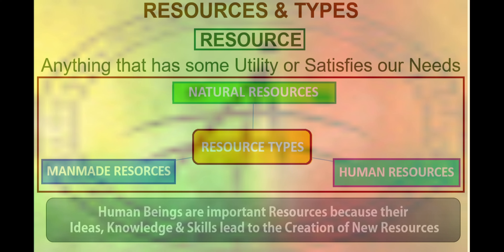Man-made resources are the objects that are converted into accessible forms after changing their original forms. For example, man-made resources include plastic, paper, soda, sheet, metal, rubber and brass etc.